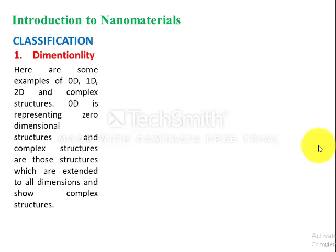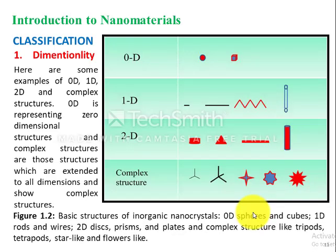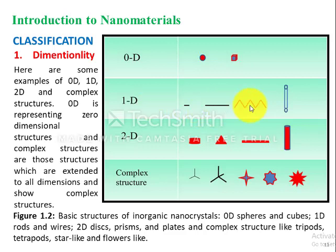While discussing dimensionality — 1D, 2D, and 3D materials — another type is zero-dimensional (0D) materials, which is often not discussed in classification. A figure represents zero-dimensional, one-dimensional, two-dimensional, and some complex structures. Zero-dimensional materials are just like dots — spheres or cubes. One-dimensional materials are nanoscale along one dimension and are usually rods or wires.